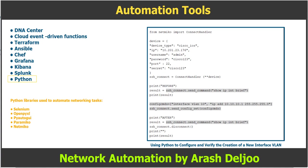Finally, the example issues the same command as in the beginning to verify that the change was applied. You can see that this example defined the device type; however, the Python libraries support a huge variety of platforms. In the event that your platform is not supported, you could use another library and still use Python. This is an example of the flexibility mentioned earlier. A similar principle applies to the commands issued, as you can replace the ones shown with any desired command.